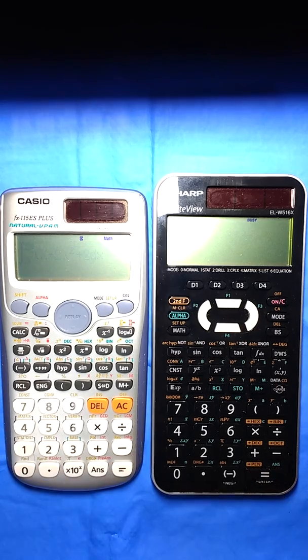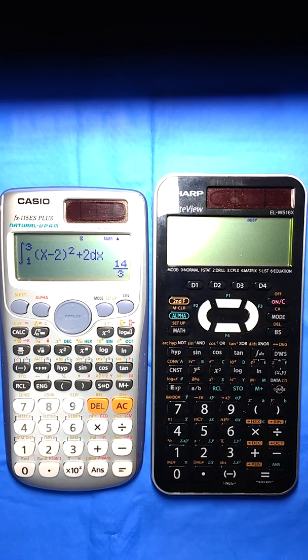Okay, so, let's race again. Go. Casio is done. 14 thirds. The Sharp is done. So, that wasn't as bad.